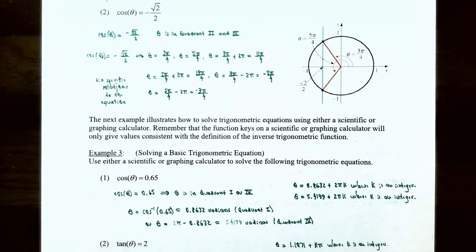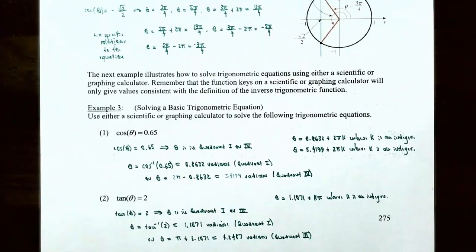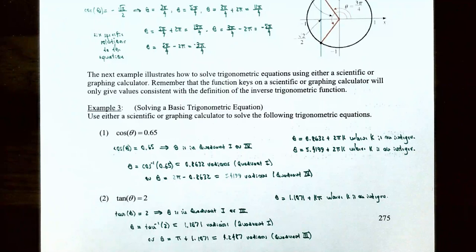Each of those six solutions makes the equation cos(θ) = −√2/2 a true statement. In the next example, we'll use a scientific or graphing calculator to solve trig equations. Keep in mind the function keys return values consistent with the definition of the inverse trig function.